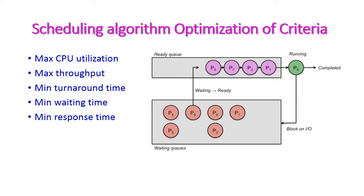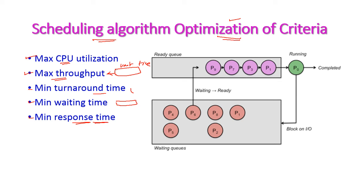With the above criteria, we need to identify which scheduling algorithm is the optimum algorithm. By these criteria, we need to compute which scheduling algorithm will produce maximum CPU utilization and maximum throughput — meaning maximum number of processes executed per unit time — and minimum turnaround time, meaning a single process should take very minimum time to complete its execution, and minimum waiting time, and minimum response time so that the process starts executing quickly.